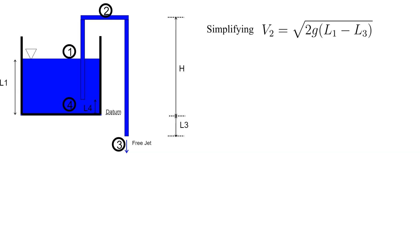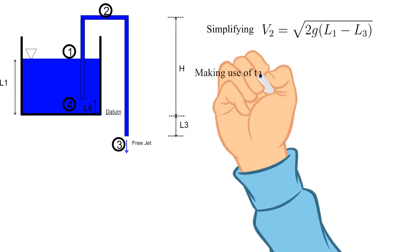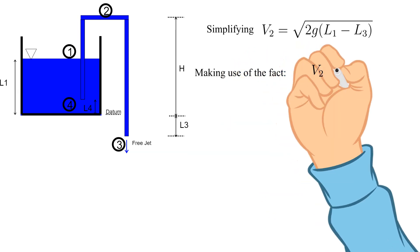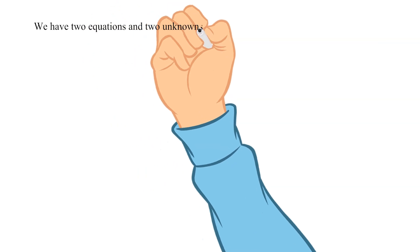Please note this is the standard equation for velocity from a large tank where both the surface and freejet are at the same pressure. This was covered in a previous instructional snippet. We will make use of the fact that V2 equals V3.